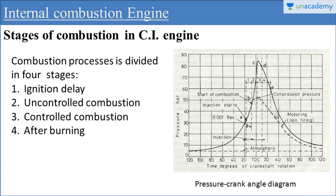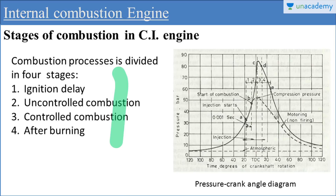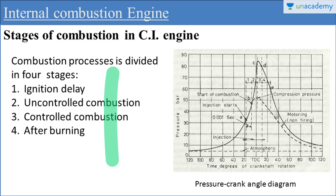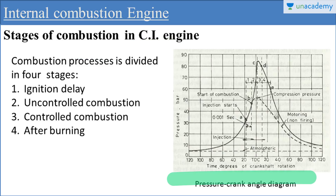Here we are discussing the combustion in a compression ignition engine. We generally consider there are four stages — the combustion is divided into four parts: ignition delay, uncontrolled combustion, controlled combustion, and after burning. The combustion is the combination of all these four processes and this combustion is represented by the pressure crank angle diagram. At the vertical axis we represent pressure and at the horizontal axis we represent crank angle — this is a P-theta diagram.